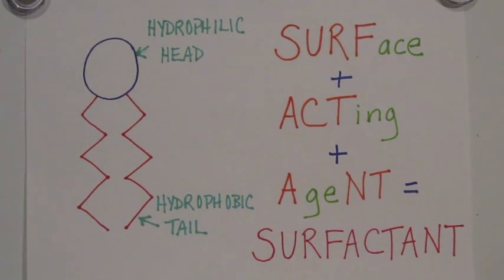The soap behaves as a surfactant. Surfactant is a word made up by some scientists because they were tired of repeating the phrase surface acting agent. Surfactants typically have a head that is hydrophilic, or water-loving, and a tail that is hydrophobic, water-fearing.